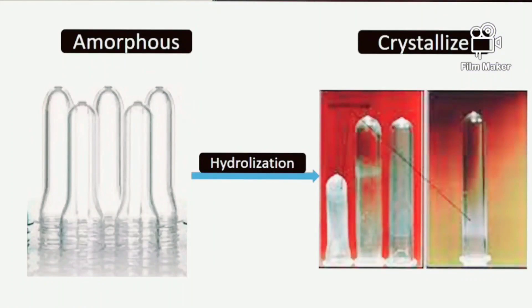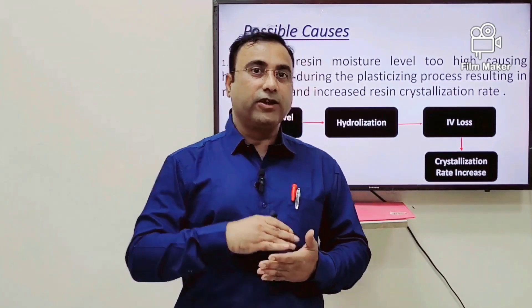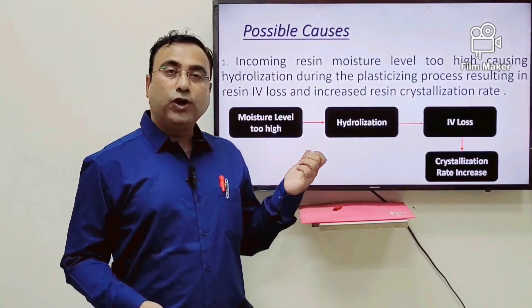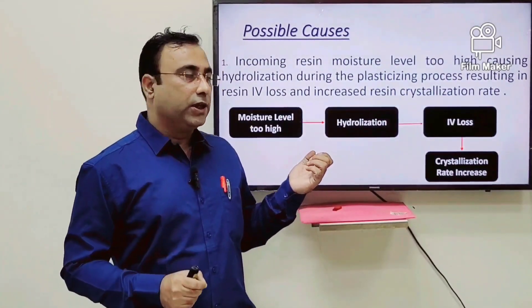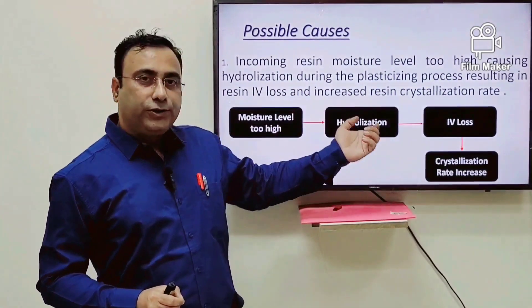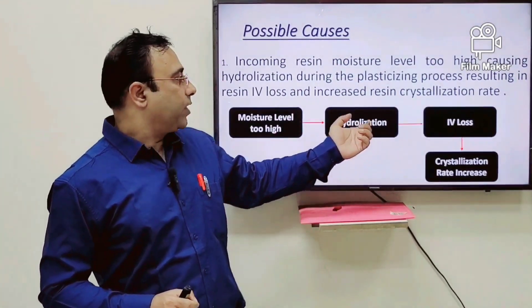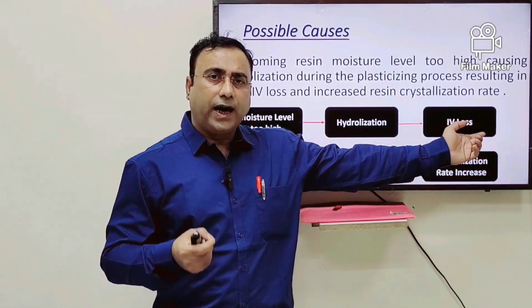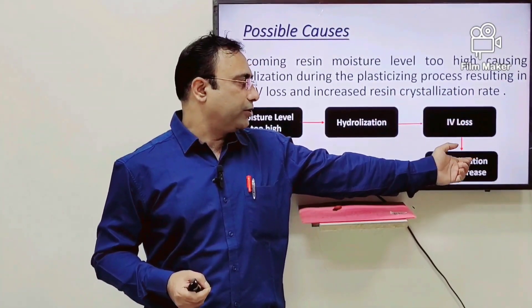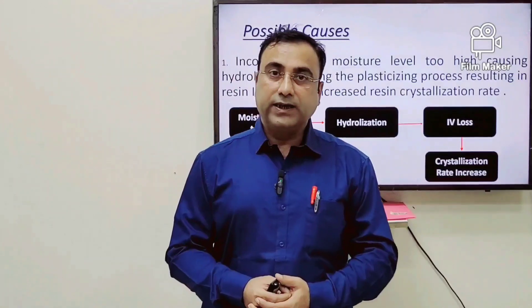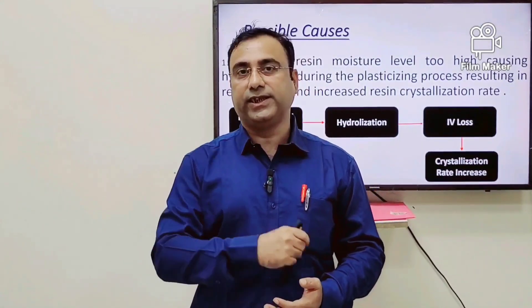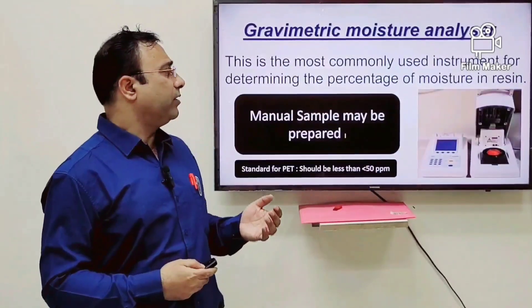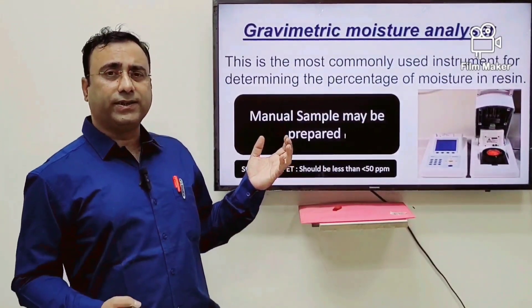Hydrolysis results in IV (intrinsic viscosity) loss and increases the crystallization rate. In this way, PET is converted from an amorphous state to a crystalline state. Moisture plays the most vital role in this conversion, causing IV loss and consequently increasing the crystallization rate.